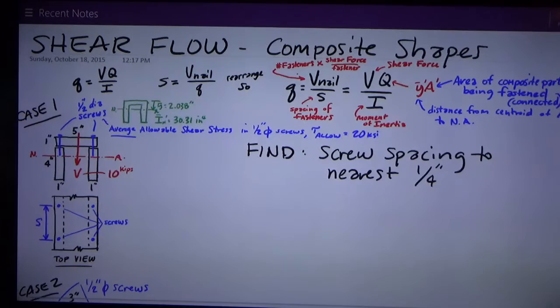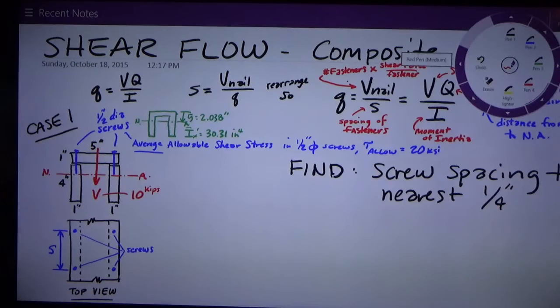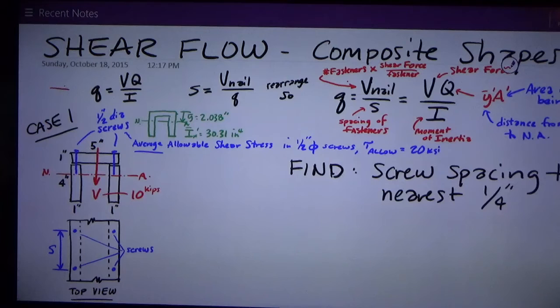The basic formulas that we're going to use are given to us on the equation sheet. One of them I like, and one of them I don't like. We get the formula, little q is VQ over I. So the units of that are force. Big Q is units cubed, so it's inches cubed. Moment of inertia on the bottom is inches to the fourth. So what I get is force per inch, or force per distance.